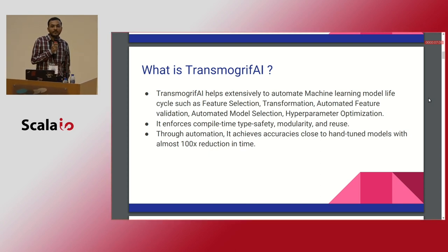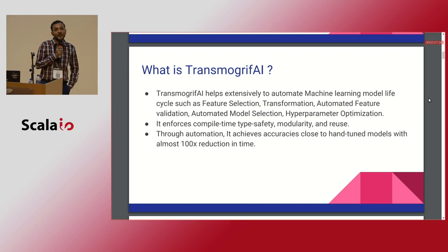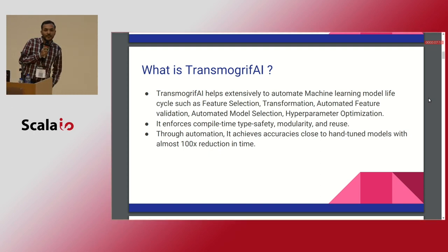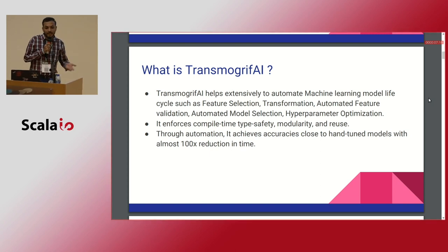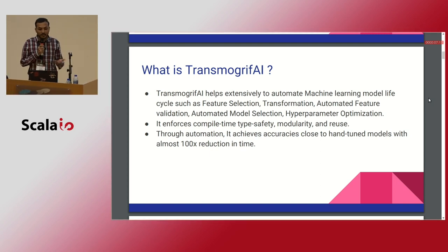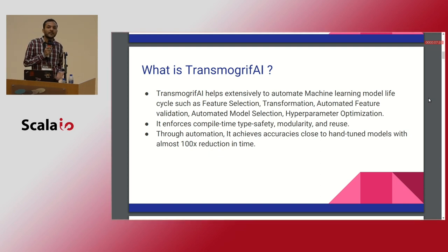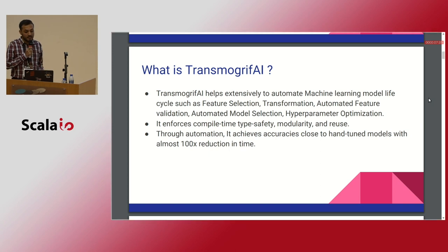An algorithm written as a machine learning model can generalize better but cannot optimize. When you want to scale it to production, when you want to do inference on top of incoming data, you need a system like Spark or Flink where you can distribute the data across a parallel cluster.